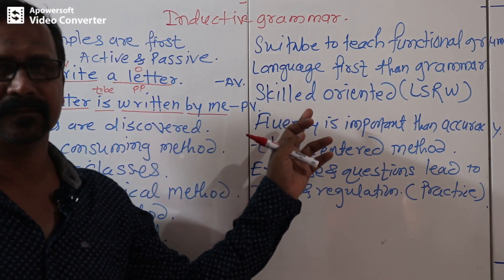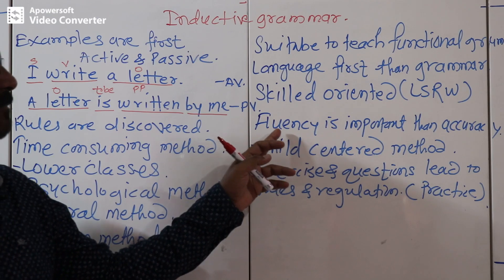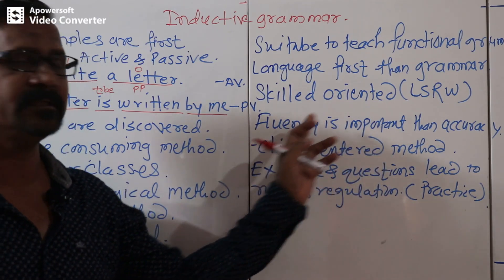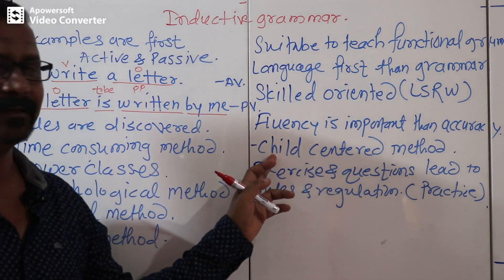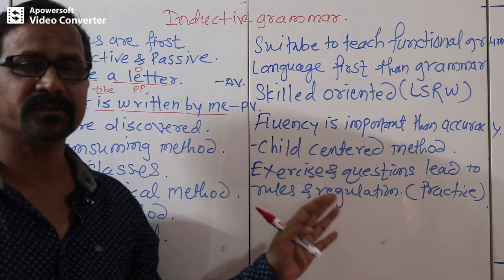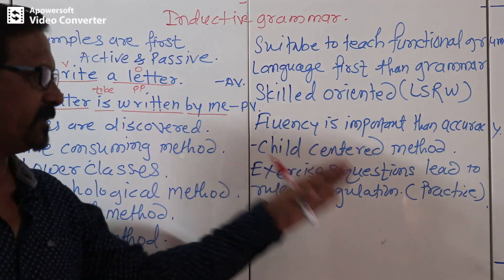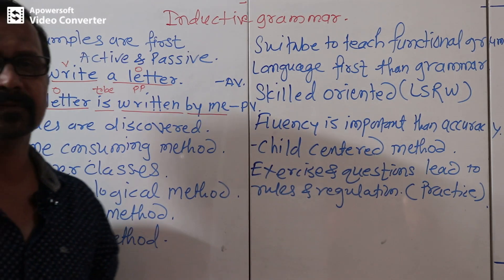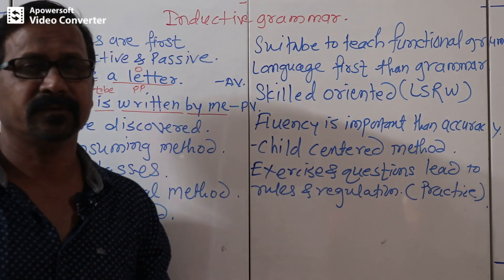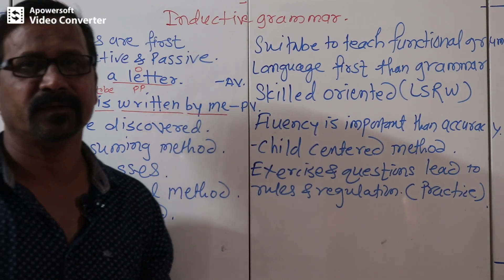In summary: inductive grammar is a skill-oriented method where listening, speaking, reading, and writing skills are developed. Fluency is more important than accuracy, and it is a child-centered method where exercises and questions lead to finding rules and regulations. Friends, this is enough for the inductive grammar method — please subscribe, like, and share. Thank you very much.